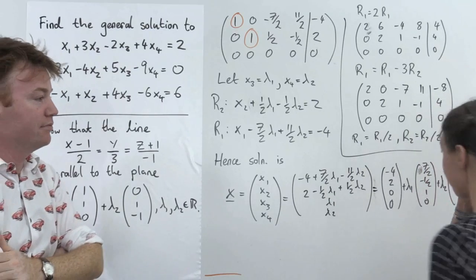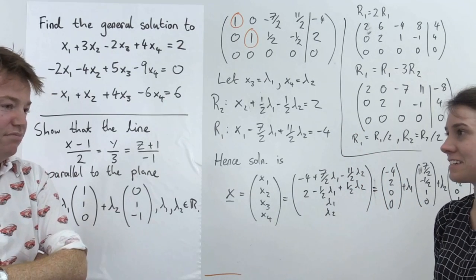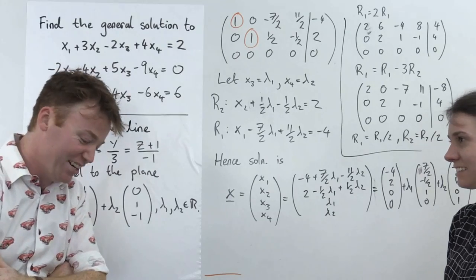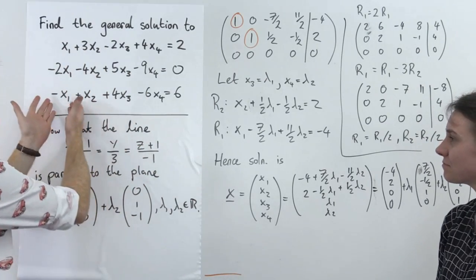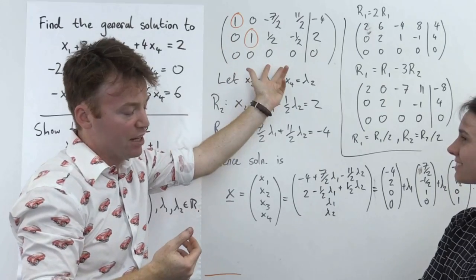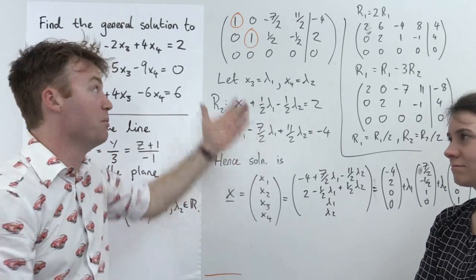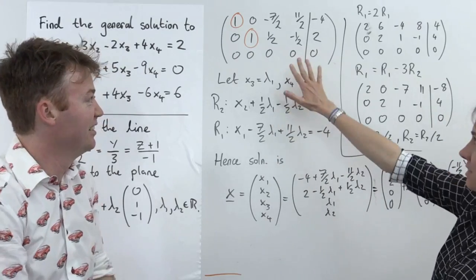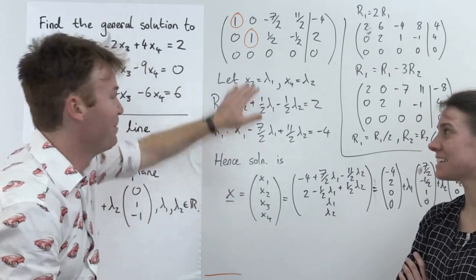A live chat question: does it matter which components you set equal to your lambdas? No — except it has to be the non-leading columns. You can't set x1 as a lambda once you have reduced row echelon form. The safe bet is to take the variables corresponding to non-leading columns. When we set up the matrix, the first column was x1, second x2, third x3, fourth x4 — x3 and x4 are non-leading, so they become the parameters. Just choose the non-leading ones — they become the parameters.